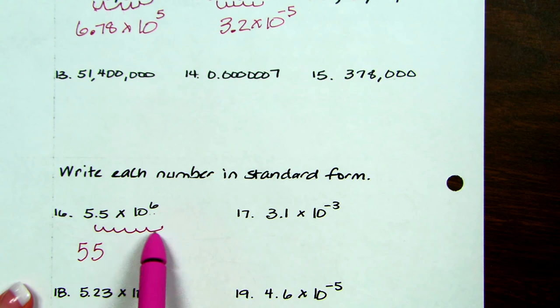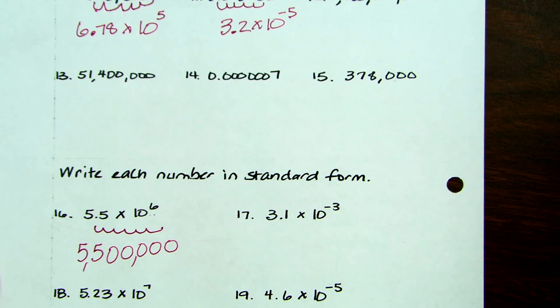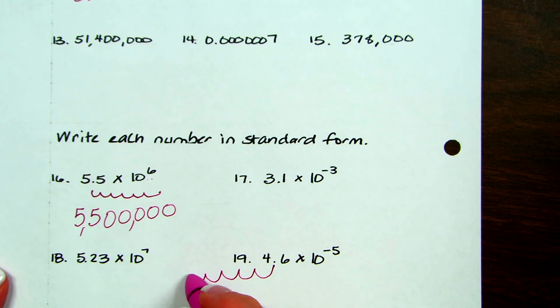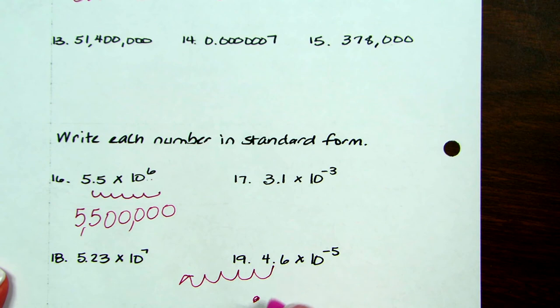So a positive exponent usually is indicating a very large number. A negative exponent is usually indicating a very small number. So look at number 19. You have a negative 5. So that means your decimal is going to go back to the left. 1, 2, 3, 4, 5. So I have a decimal place and then 1, 2, 3, 4 zeros. 1, 2, 3, 4 zeros.